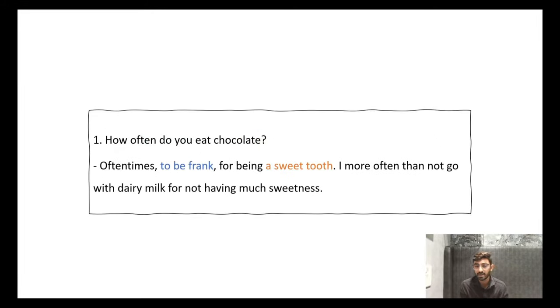So instead of just saying I often do this, use: Often times, to be frank, for being a sweet tooth, I more often than not go with dairy milk for not having much sweetness. Often times is a synonym for often. Then, to be frank, which one is in reality. Yes, I eat more times. I have mentioned reality. To be frank, you can use this phrase - to be honest, honestly speaking. And third is a sweet tooth. This is an idiom for someone who loves sweet things. More often than not is a synonym for usually.